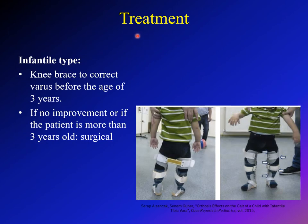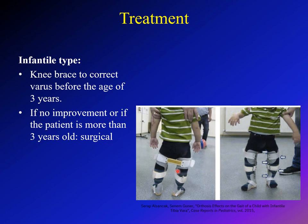For the infantile type, treatment is necessary because it is progressive. In young children ages two to three, the treatment is bracing — a KAFO (knee-ankle-foot orthosis) that produces valgus to correct the varus deformity. If there is no improvement or the patient is four years or older, the treatment is surgical.